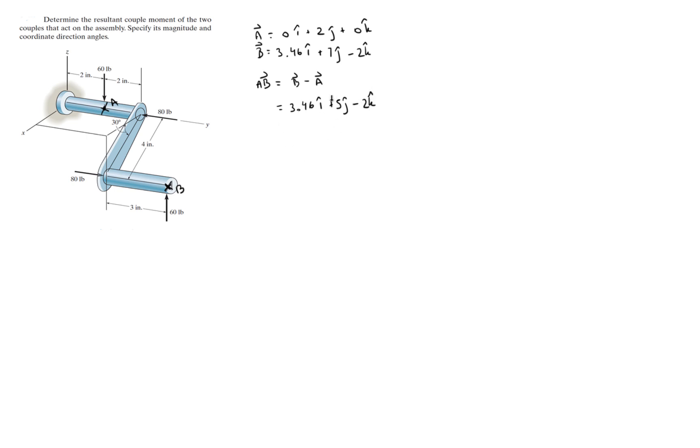Now that we have this vector, in case you're wondering how we found B, let me write it down right here. Because B has an X component, a Y component, and a Z component. The X component of the position of B might be a little tricky; it's just this triangle which has an angle of 30, so the X component of B is given by 4 cosine of 30. The Y component of B is simply 7, which is 2 plus 2 plus 3, and the Z component of B is 4 sine of 30.